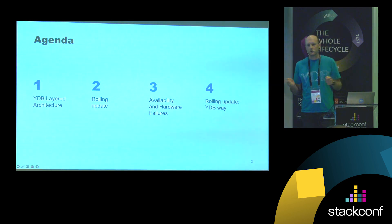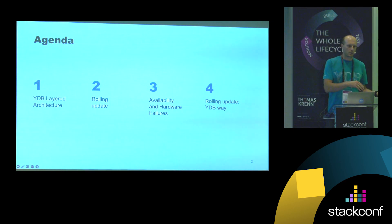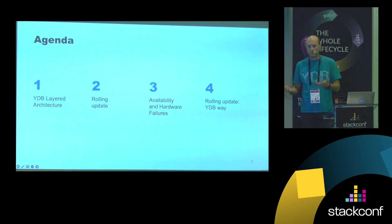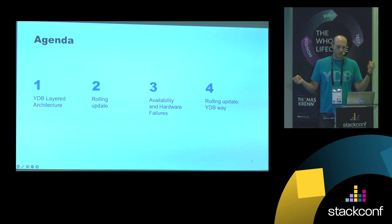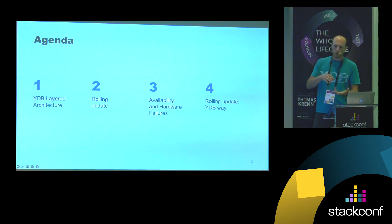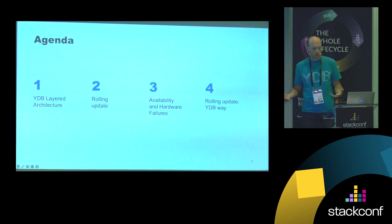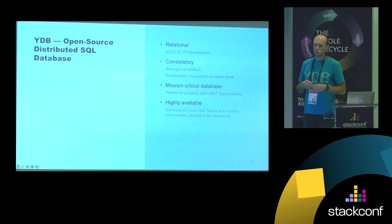Today I will describe a little bit about YDB — what this system is all about. I will tell about its layered architecture. Then we will talk about rolling updates, why we need them and why they are different from other types of updates. Then I will show which types of availability failures might occur when you refresh the version of the database cluster. And we will understand how YDB and its layered architecture helps to handle all these failures and not cause a lot of errors during the rolling update.